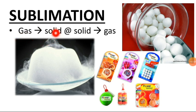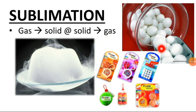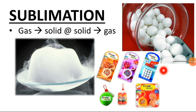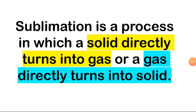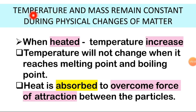Next is sublimation — gas turns directly to solid, or solid turns directly to gas, skipping the liquid phase entirely. An example is naphthalene, which you might find in a toilet used to get rid of cockroaches or to freshen the air inside. Sublimation is the process in which a solid directly turns into gas or gas directly turns into solid.